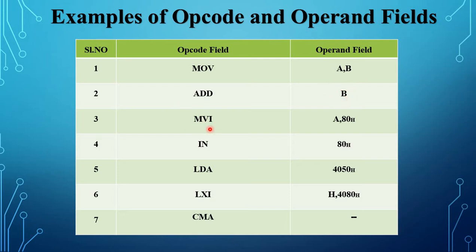Third example: MVI A, 8-bit data. MVI means move immediate. A is 8-bit data, so in the operand field 8-bit data is specified. Fourth instruction: IN port address. IN is the opcode, and the port address is the 8-bit address, so the operand field contains an 8-bit address.